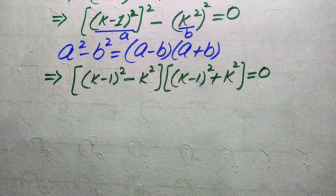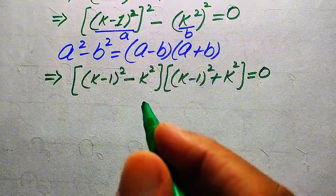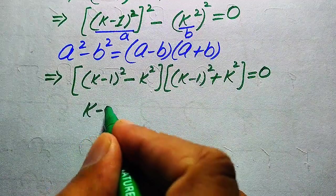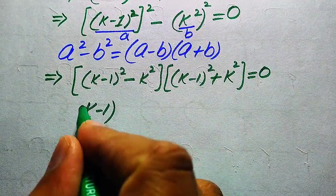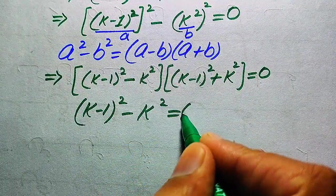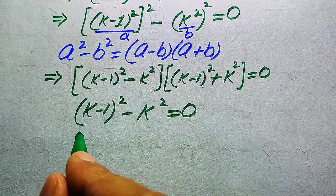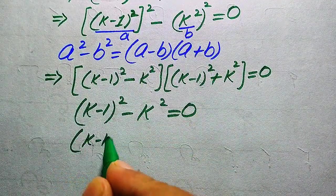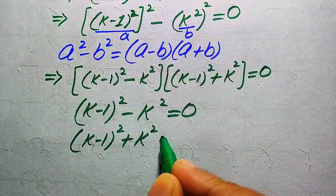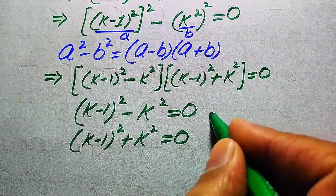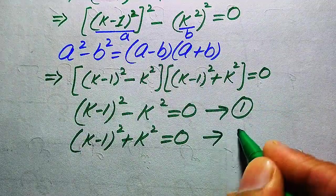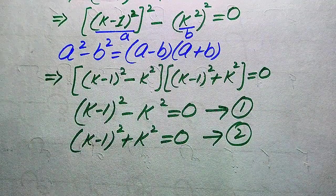We now break this into two equations: Equation 1 is (k minus 1)² minus k² equals 0, and Equation 2 is (k minus 1)² plus k² equals 0. We solve these two equations separately to find all roots of the original equation.